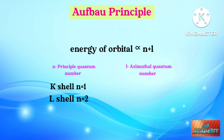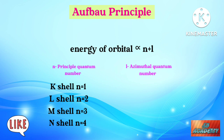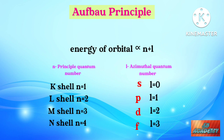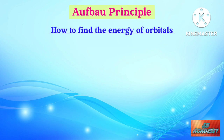When n equals 3, it is the M shell, and when n equals 4, it is the N shell. There are four suborbitals: s, p, d, and f. For s, l equals 0; for p, l equals 1; for d, l equals 2; and for f, l equals 3. So l starts from 0 and goes up to 3. Now let's find out the energy of orbitals.